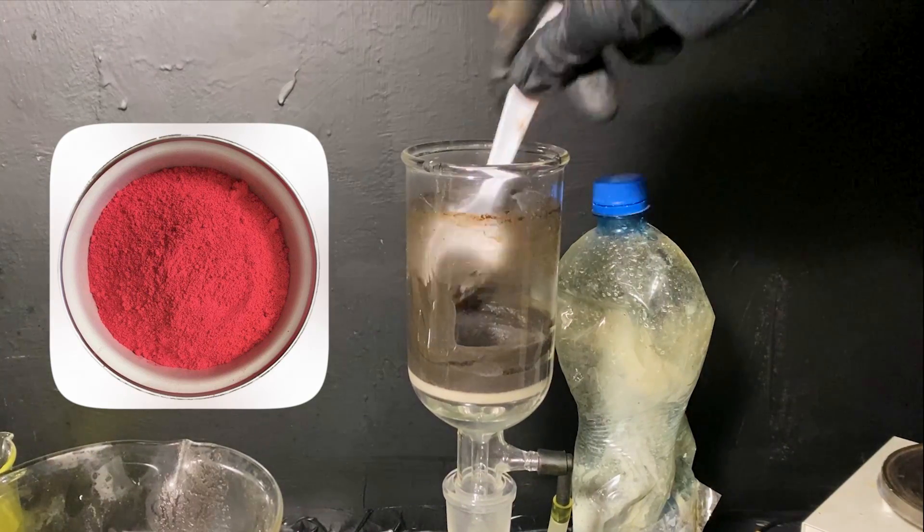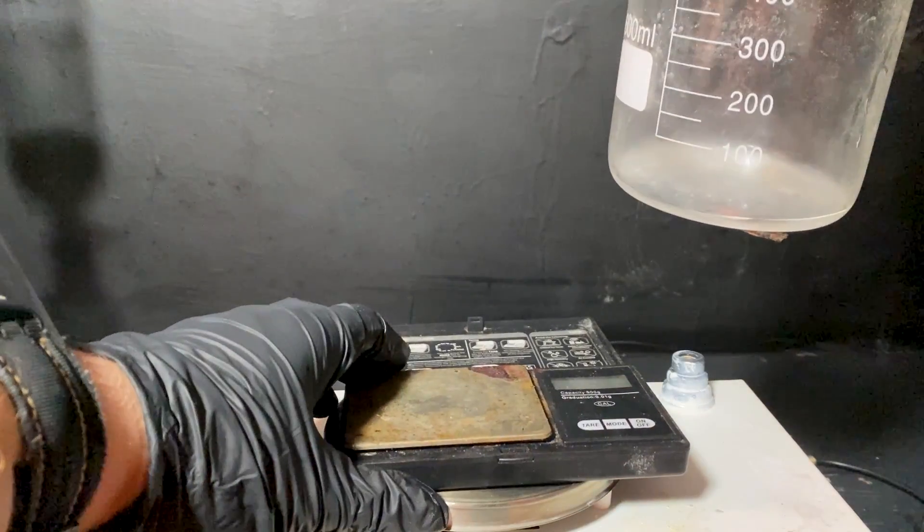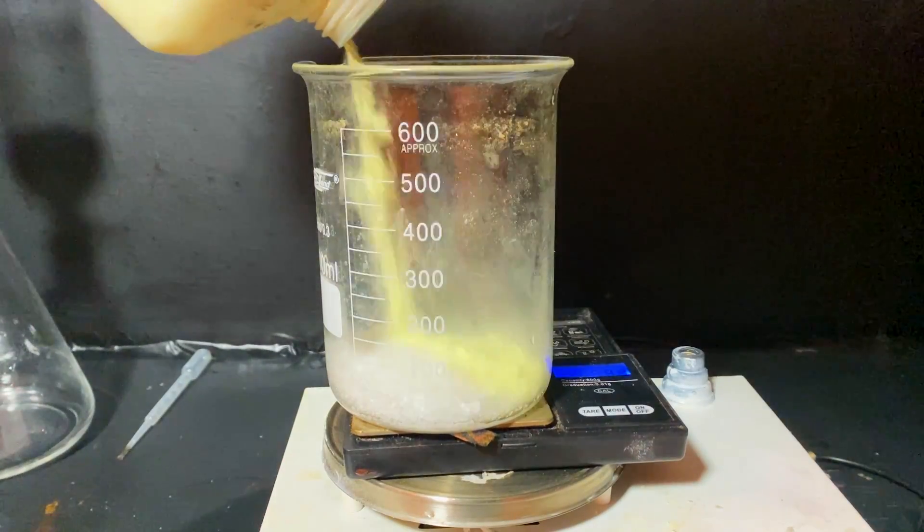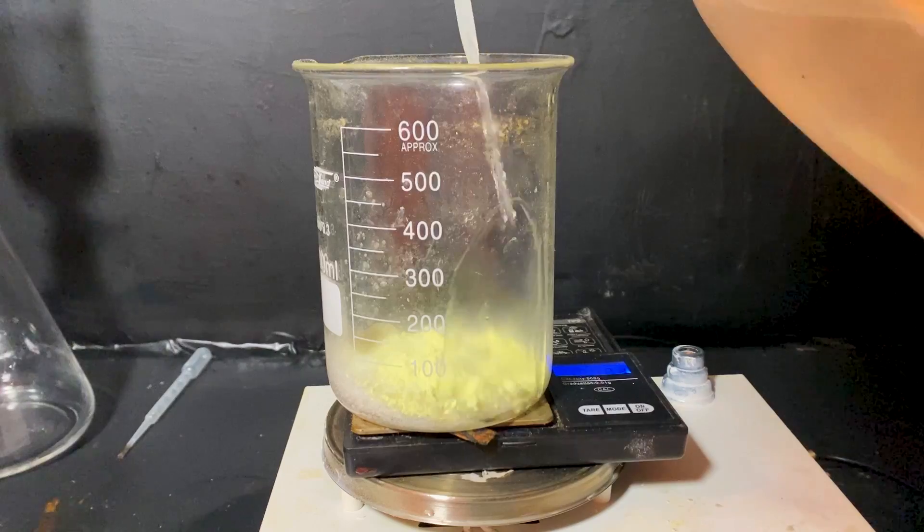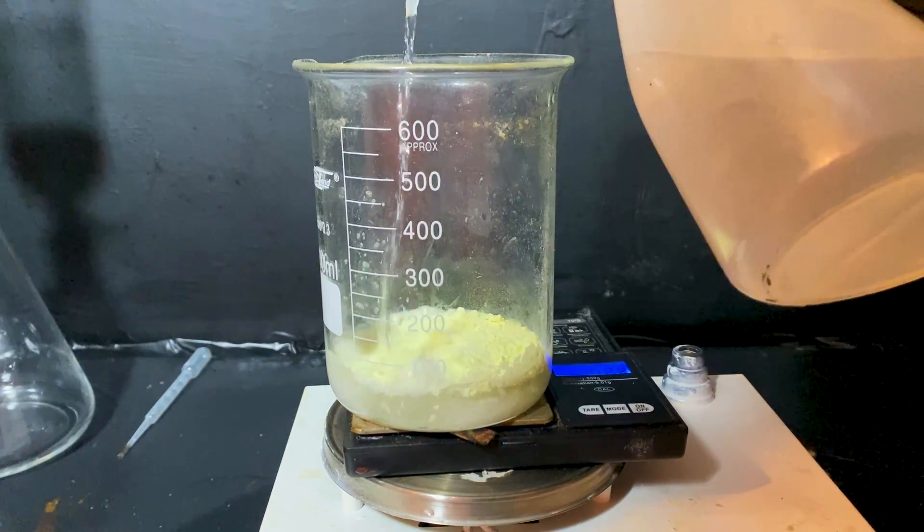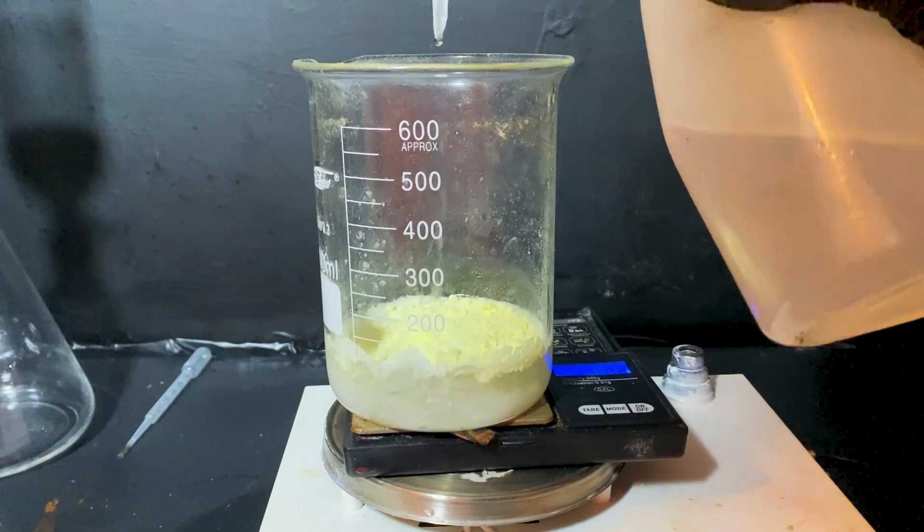To do that, I first have to make a polysulfide bath. Into a beaker, I've added 40 grams of sodium hydroxide followed by 6 grams of sulfur, and I waterboarded the mix with water. When sodium hydroxide dissolves into water, it releases heat, which will propagate the reaction between sodium hydroxide and sulfur.